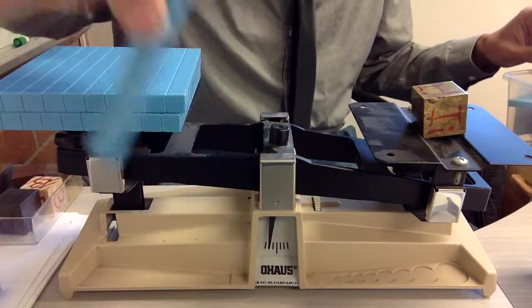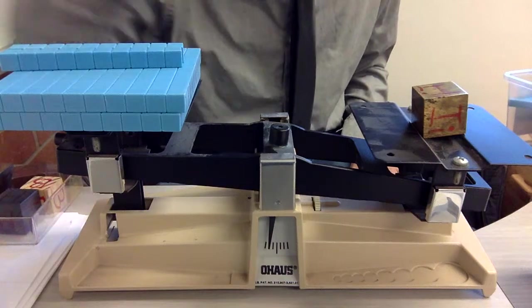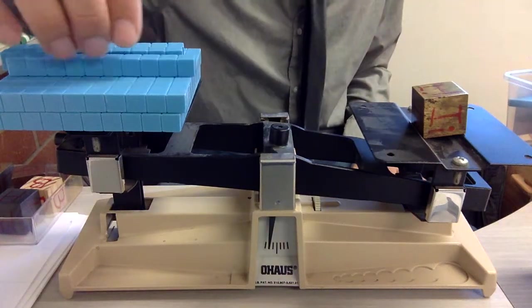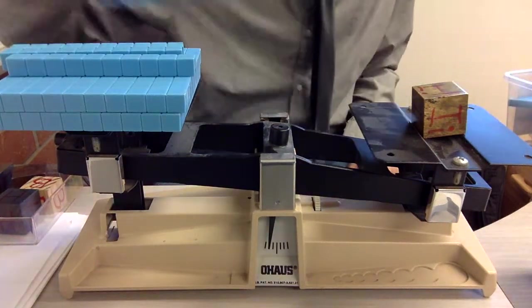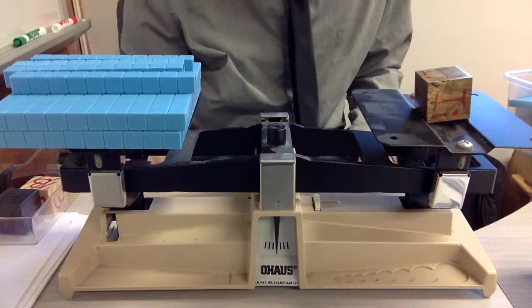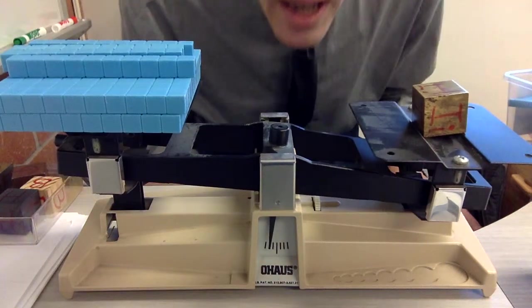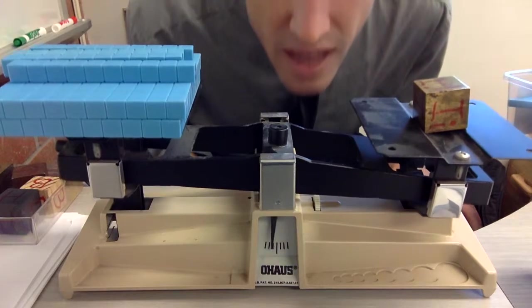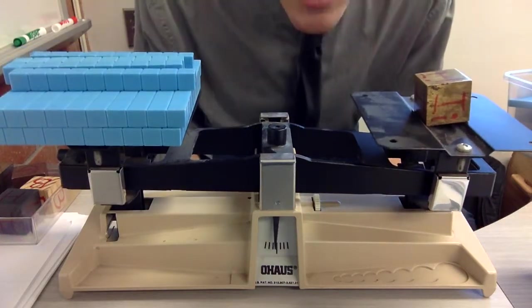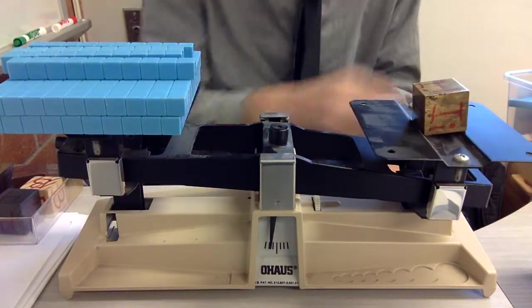Let's take that off and start adding tens. These are what the tens look like. Now we're at 210, 220, 230, 240. Oh wait, what's it doing? You see the balance is starting to move and it's almost at equilibrium.